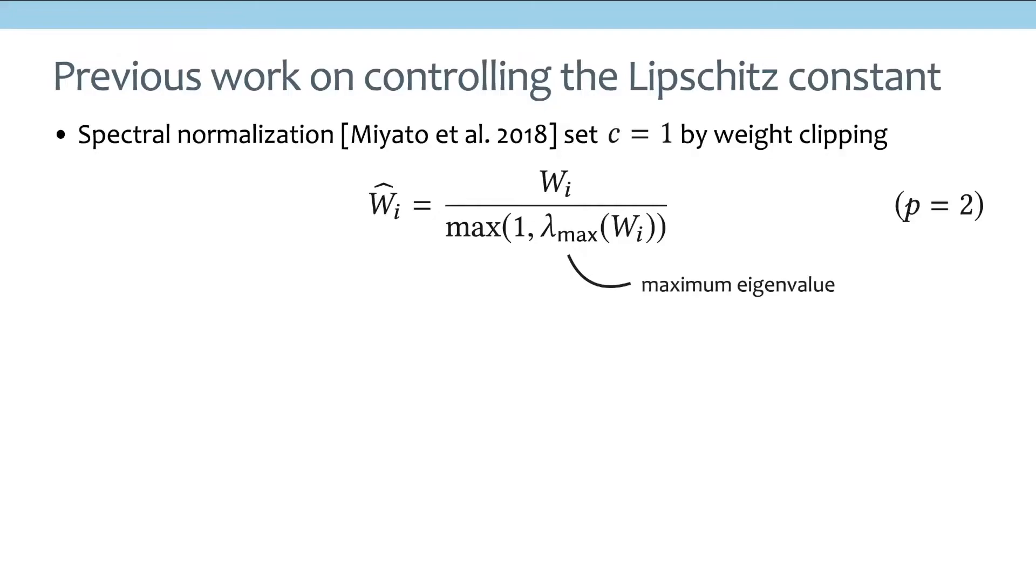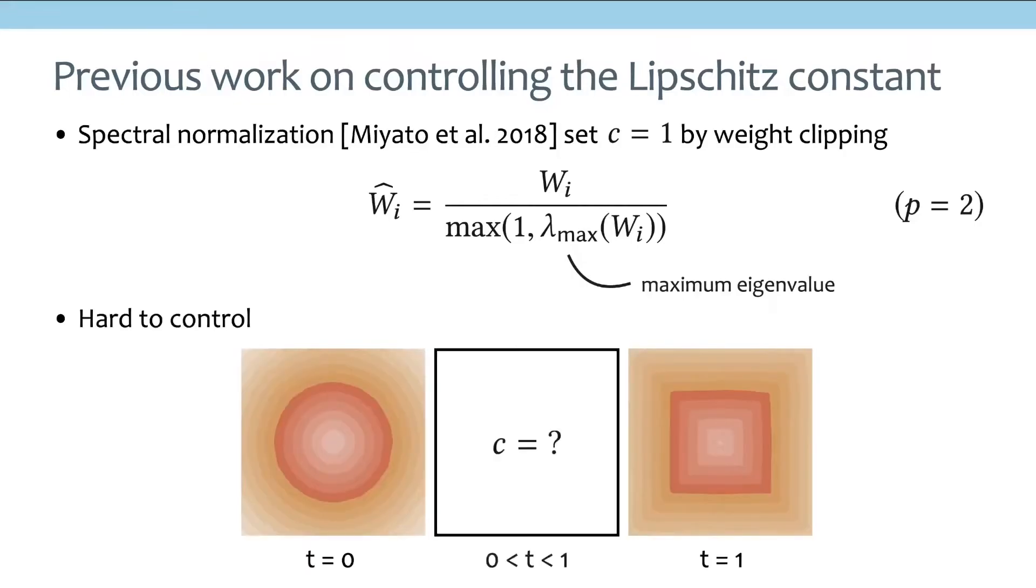So in this case, they choose the p-norm to be 2, which corresponds to the maximum eigenvalue. So at every iteration, they basically scale down the weight matrices according to the maximum eigenvalue. And this is very effective in their context, but controlling Lipschitz constants is really not what we want. Because if you look at, for example, interpolation tasks we saw earlier, it is unclear what would be a Lipschitz constant that we should use to interpolate, for example, a circle to a square.